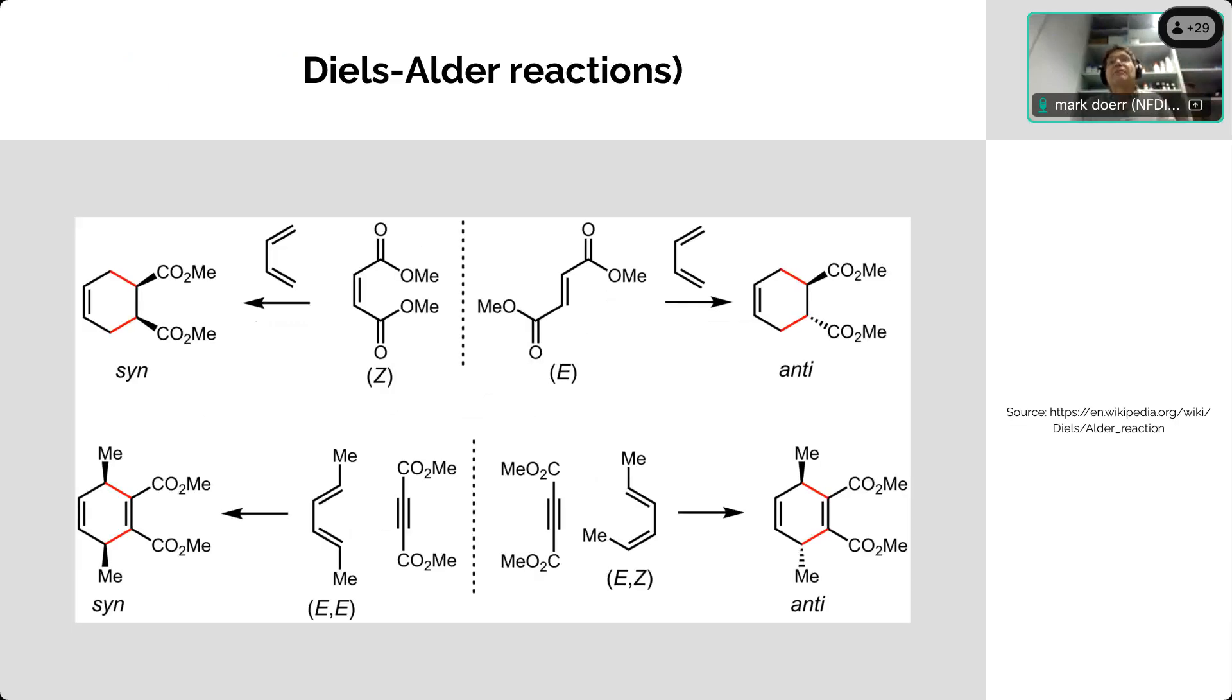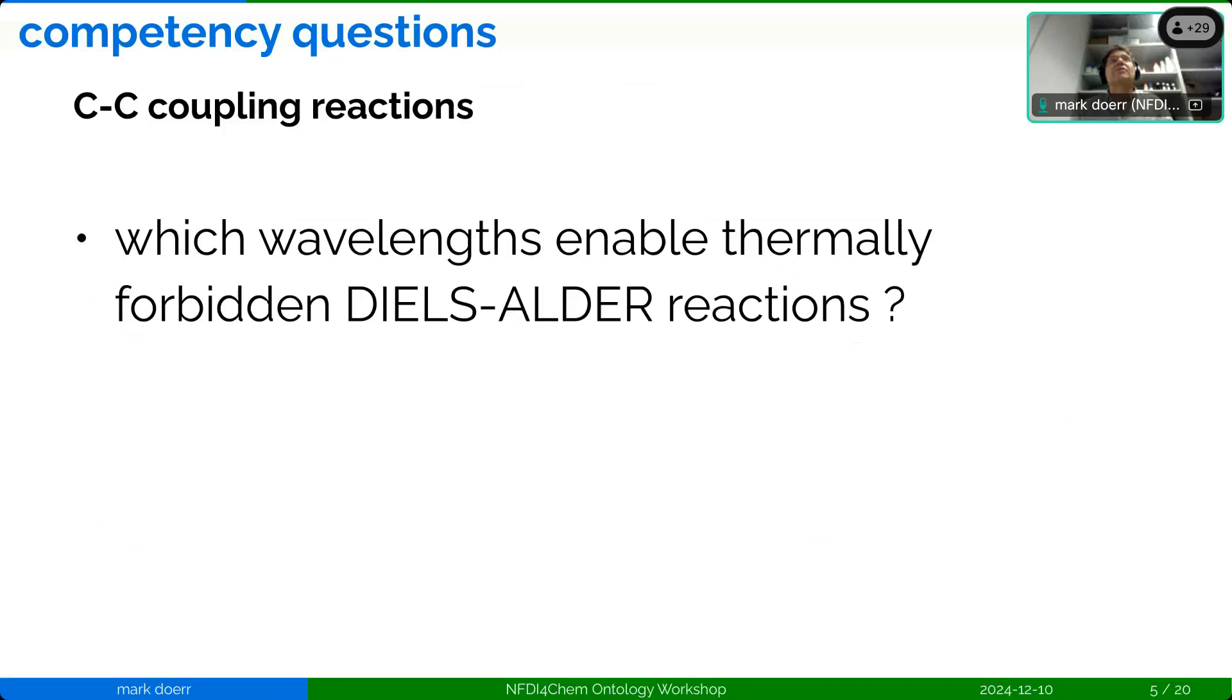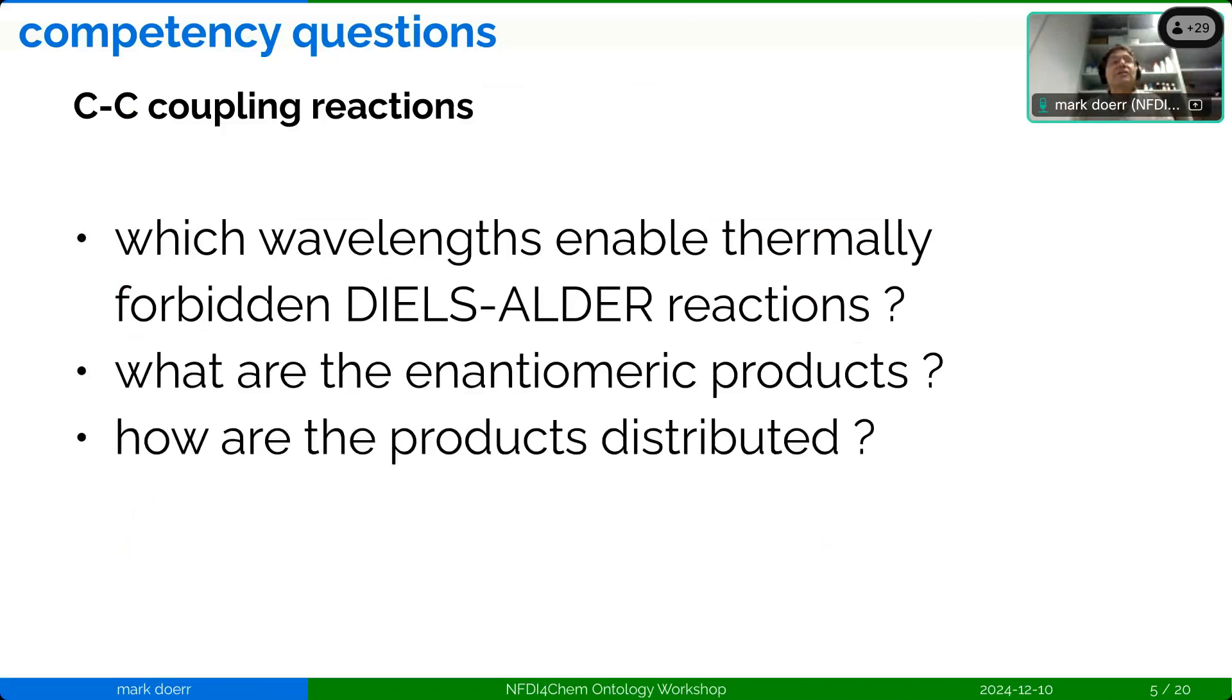Another example are the Diels-Alder reactions. Diels-Alder reactions are sometimes thermally allowed, sometimes photochemically allowed. And then they show stereochemistry, and it's very dependent on the situation. It's not something that you can easily predict, at least if you don't do complex modeling of these reactions. If you think about a database or a graph database, a knowledge graph that represents such reactions, one would need to add this information under which conditions a reaction is possible. For example, which wavelengths enable thermally forbidden Diels-Alder reactions, or what are the enantiomeric products of these reactions? Or how are the products distributed?